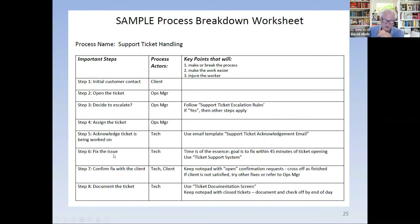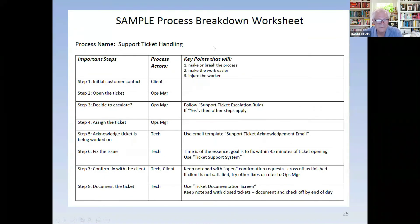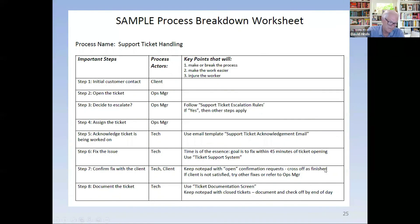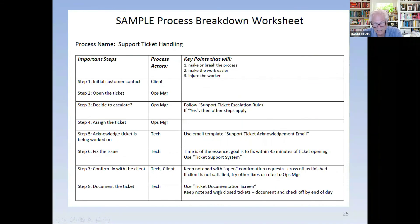The issue is then fixed by the tech. The key point to make or break the process is that time is of the essence — the target is to fix issues within 45 minutes — and using the ticket support system makes the work easier. Next, confirm the fix with the client — both tech and client are involved. You can keep notepads to track what's open. If the client is not satisfied, there are steps to follow. The last step is documenting it internally — it's not just between the client and tech; you have to document it for internal purposes.